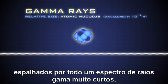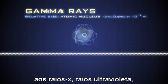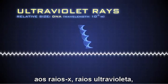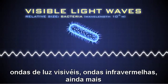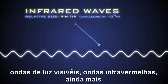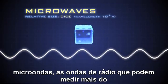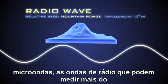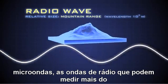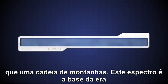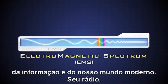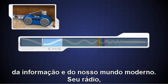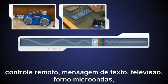These waves spread across a spectrum from very short gamma rays to X-rays, ultraviolet rays, visible light waves, even longer infrared waves, microwaves, to radio waves — which can measure longer than a mountain range. This spectrum is the foundation of the information age and of our modern world.